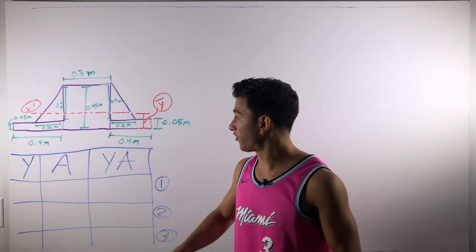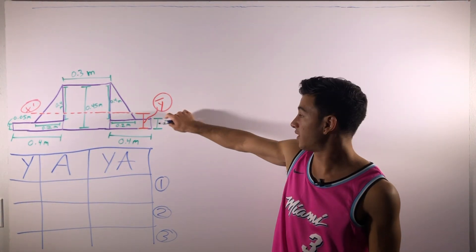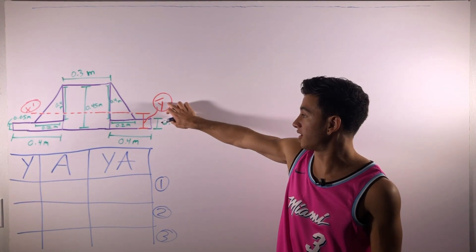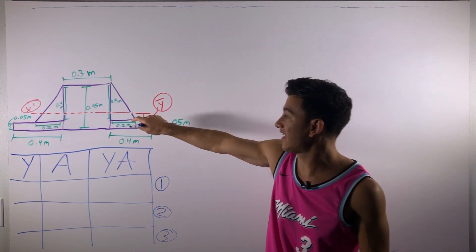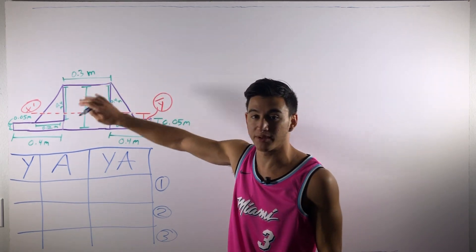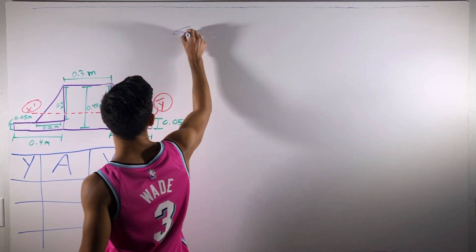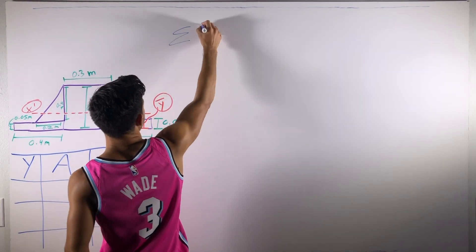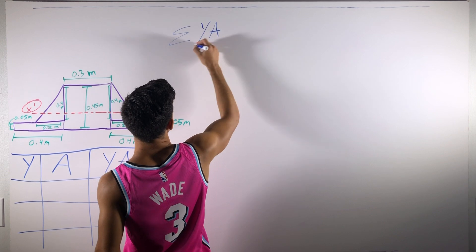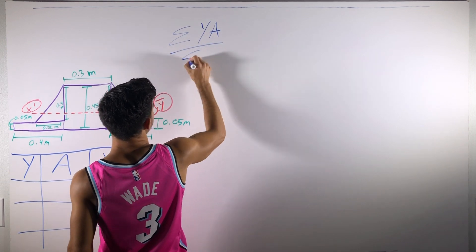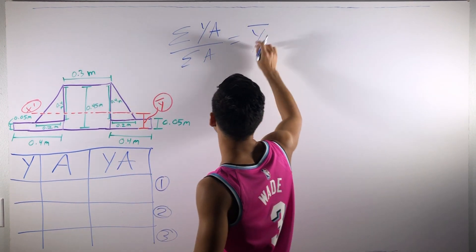So the first thing I'm going to ask you to find is the centroid right here, this y-bar. We have to find that of the entire beam. So in order to do that, it's the summation of y times the area over the summation of just the area, and that equals y-bar.